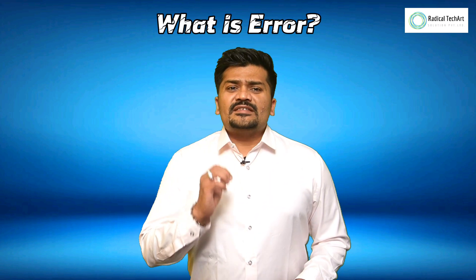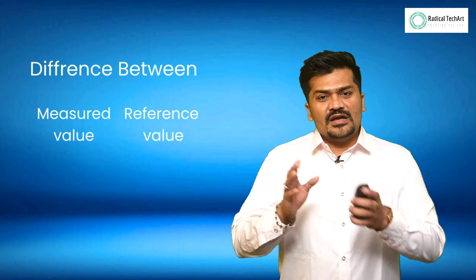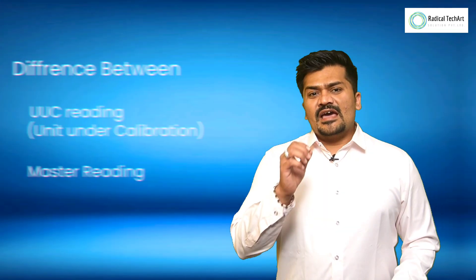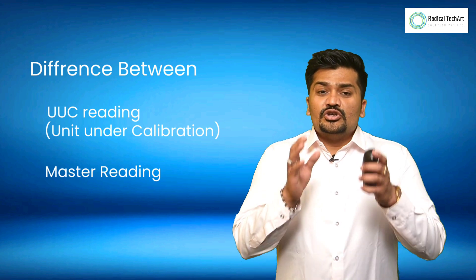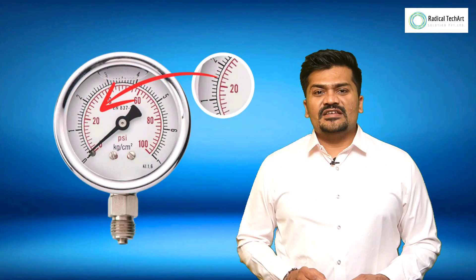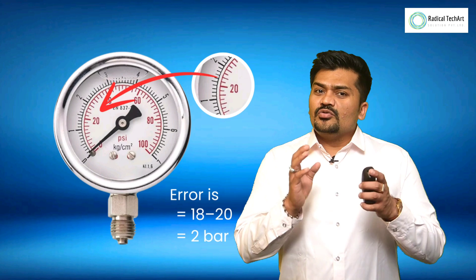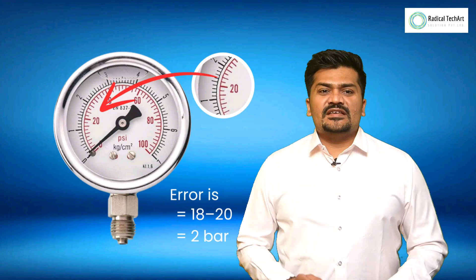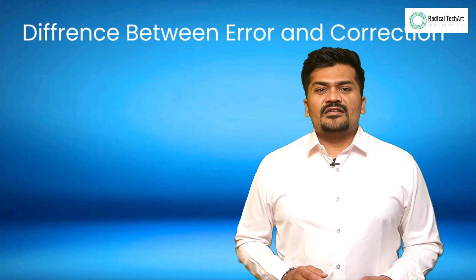Now let's see what is error. Error is the difference between the measured value and the reference value — that is, the difference between the unit under calibration reading and the calibration reference reading. For example, if the pressure gauge reads 20 bar but the unit under calibration reads 18 bar, then the error is 2 bar.